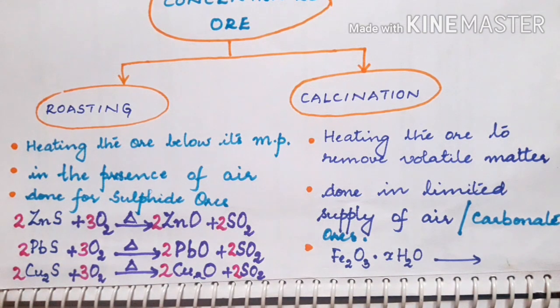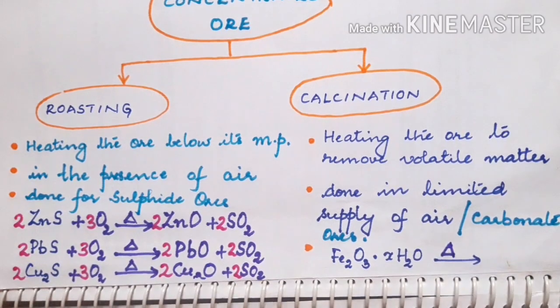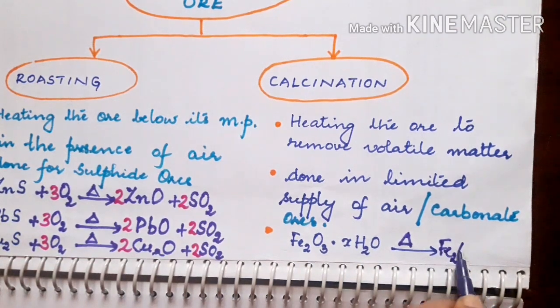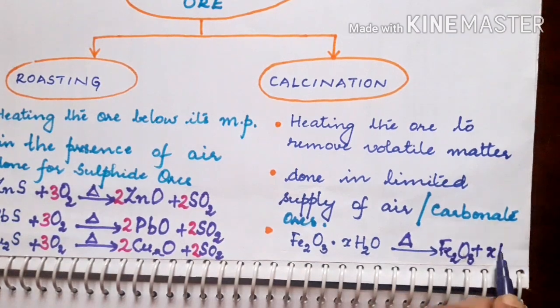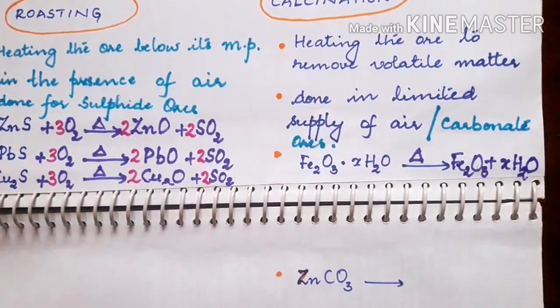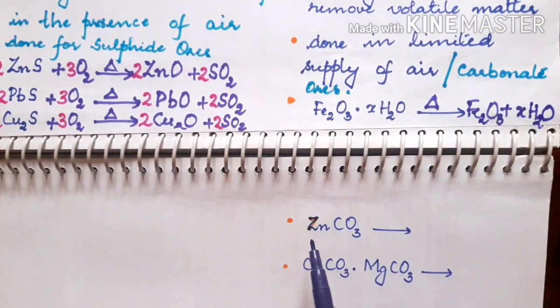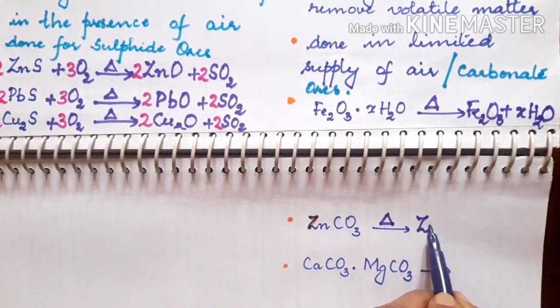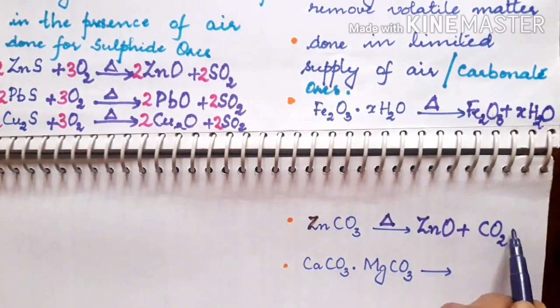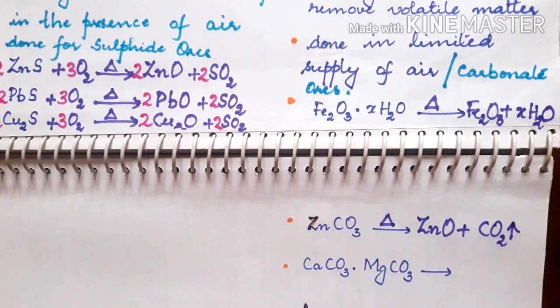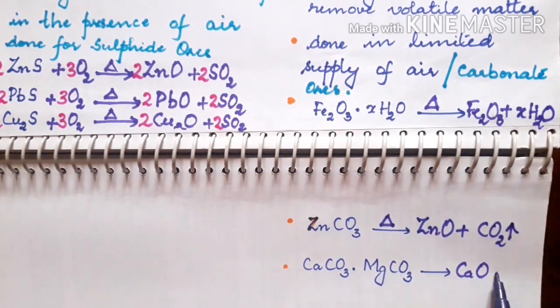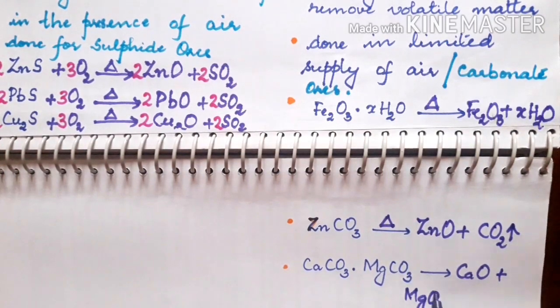Suppose if you are taking Fe2O3·xH2O, on heating it will remove the volatile impurity, water is removed, and you get Fe2O3 + xH2O. Now if you take the compound ZnCO3, zinc carbonate, on calcination it will be converted to ZnO + CO2. So CO2 is removed from the compound. Calcium carbonate magnesium carbonate mixture if taken will be converted to calcium oxide, magnesium oxide, and carbon dioxide.